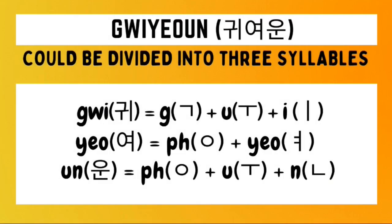How do we write kyoun in Hangul? For the first syllable, we draw a kyo character followed by a u character followed by an e character. The combination of the u and e characters results in the 'wi' sound. Next is the second syllable yo. For the last syllable un, we draw a no-sound iang followed by the u character followed by the neon character. Then we combine all of these to form the Hangul of kyoun.